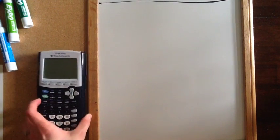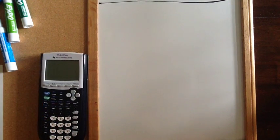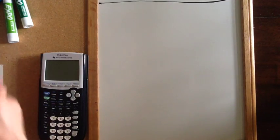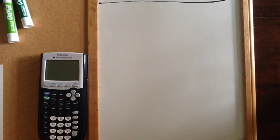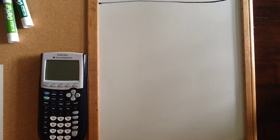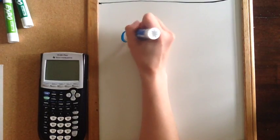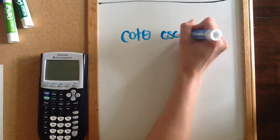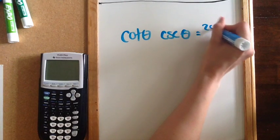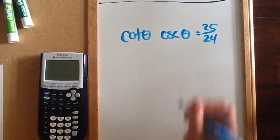We're going to take a look at how to find a trig ratio given another ratio that we have. For example, if I want you to find the cotangent of theta, and I tell you that the cosecant of theta is 25/24.